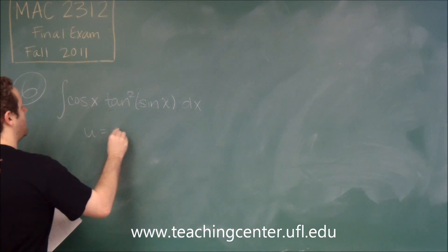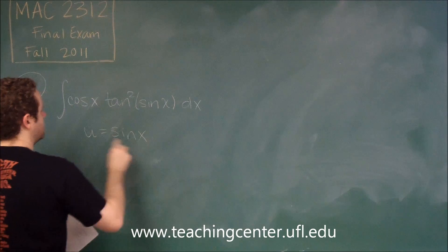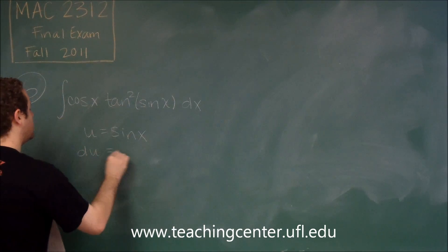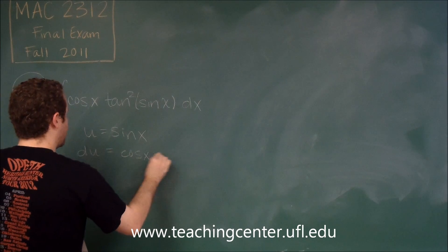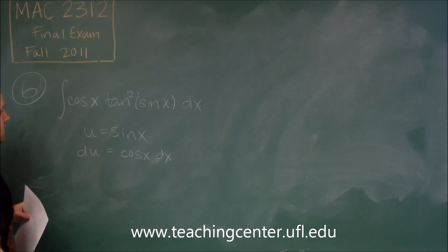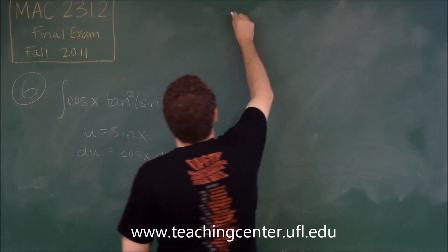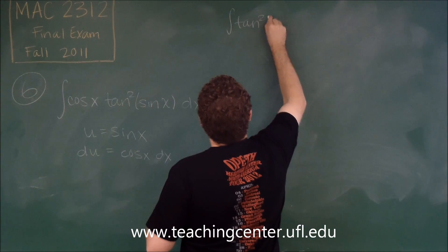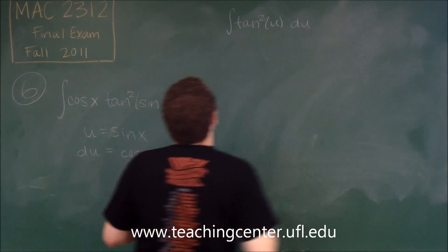As you might expect, we want u to be sine x because we have cosine x right there. It's going to work out nicely. So we have du equals cosine x dx. You can see cosine x dx is right there, so this integral becomes tan squared of u du.